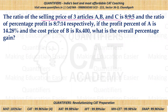The ratio of profit percentages is also given as 8 : 7 : 14. The profit percent of A is given as 14.28%. We know the cost price of B, which is ₹400. We have to find the overall profit percentage.